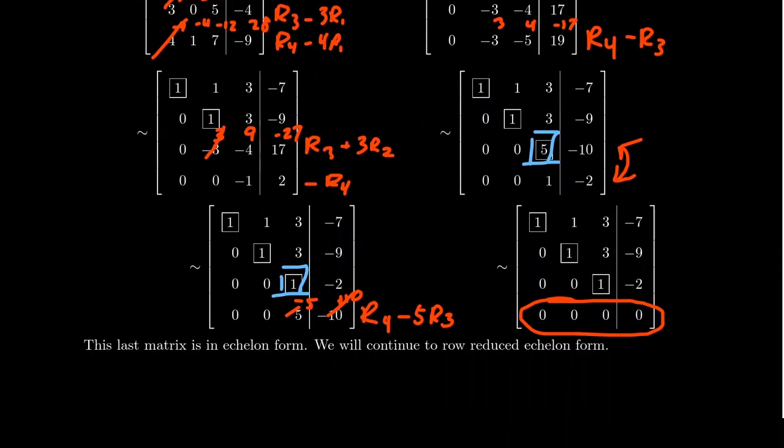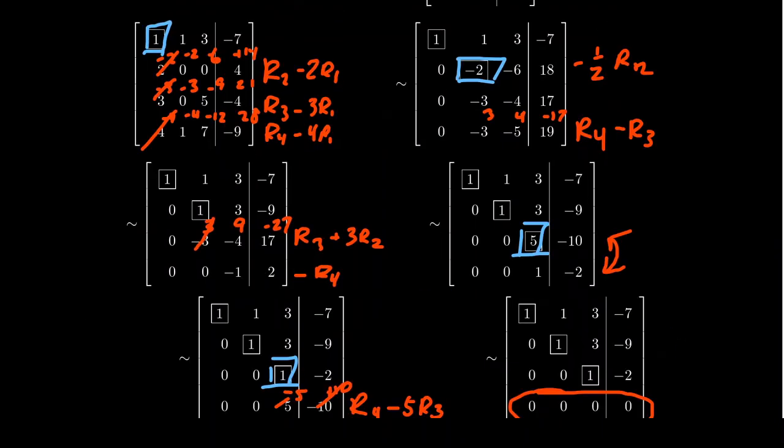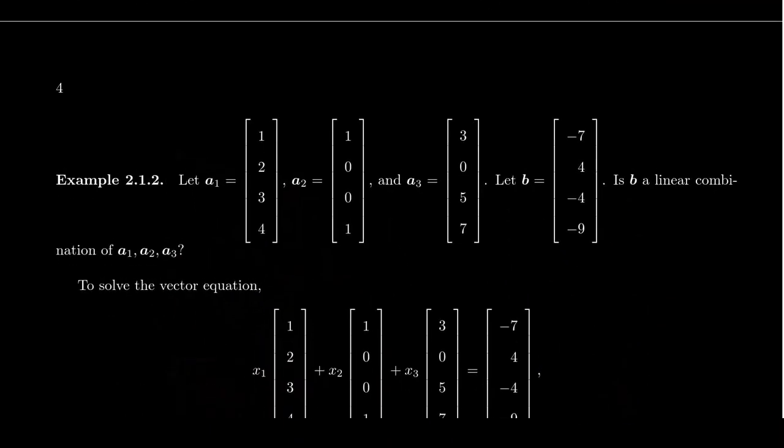So we see that our matrix, since it's in echelon form, the corresponding system of equations is going to be consistent. We can see that. In fact, there's no contradictions in an echelon form, so the system is consistent. Coming back up to the original question, right? Is B a linear combination? Is B a linear combination of A1, A2, A3? Because this system is consistent, the answer to this question is yes.